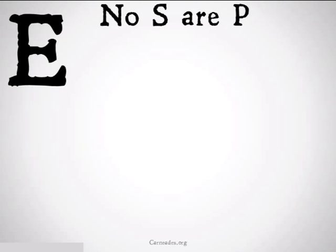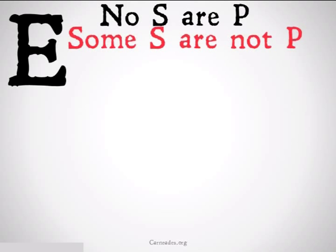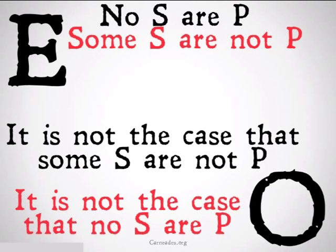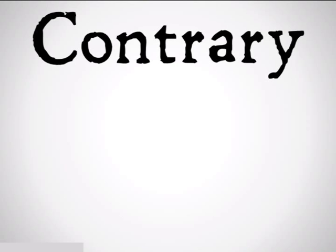Similarly, we can make some arguments with this. No S is P, therefore some S is not P — truth flowing down. It is not the case that some S is not P, therefore it is not the case that no S is P — falsehood flowing up.